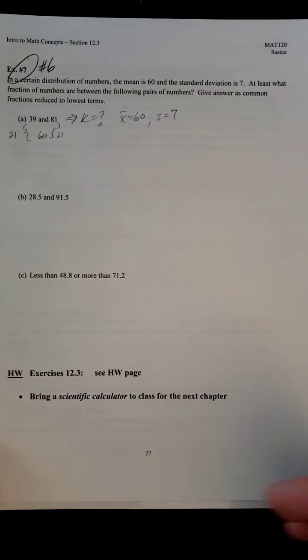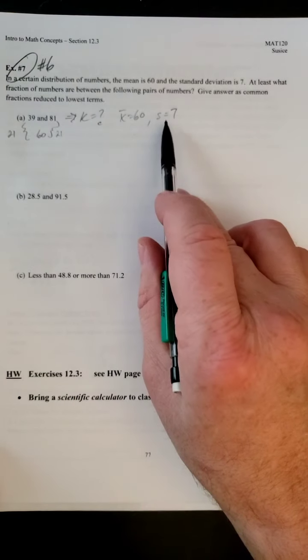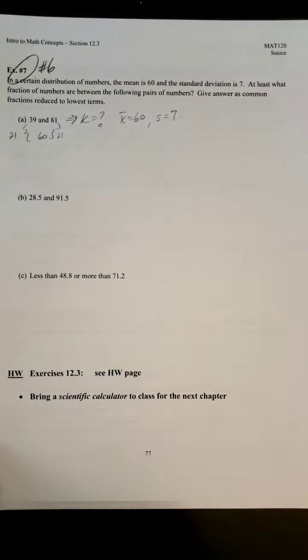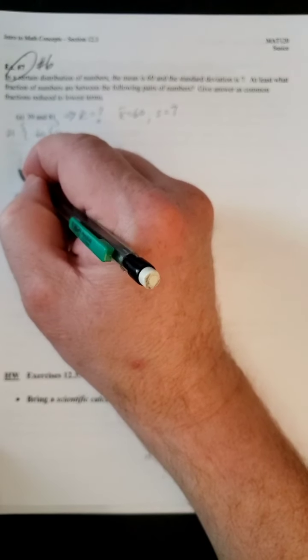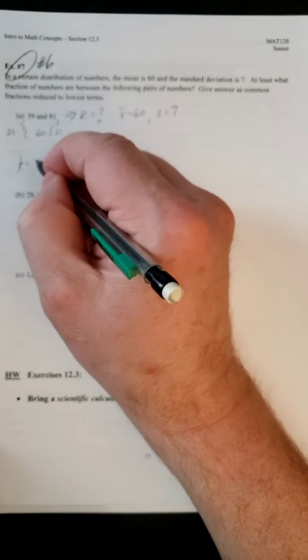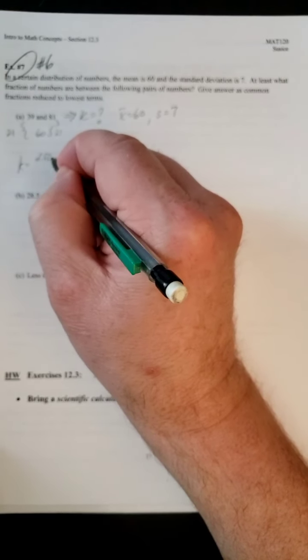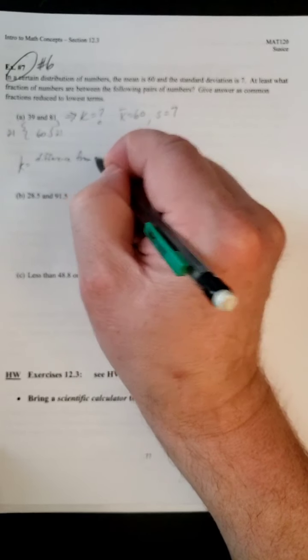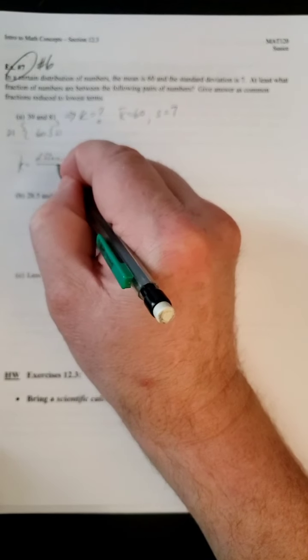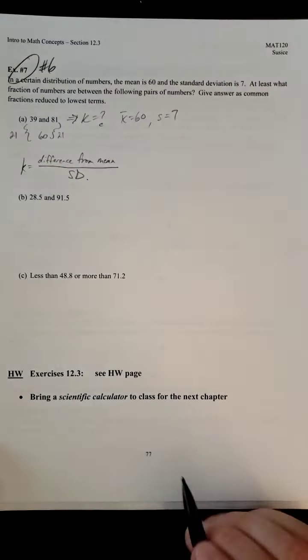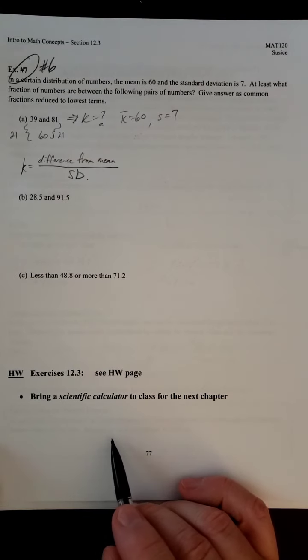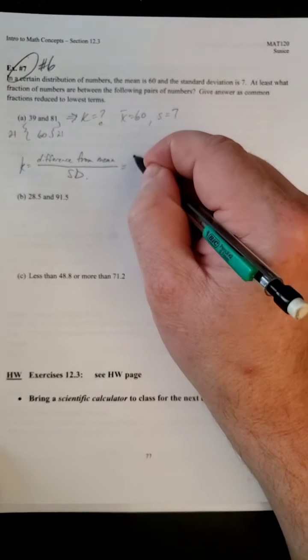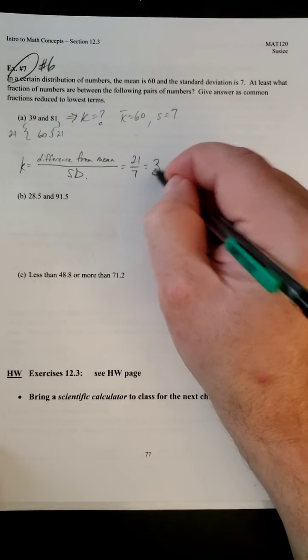So we do get the same amount on both sides, but now the question is, how does 21 relate back to our standard deviation? Here's the formula to define k. We want to look at this difference from the mean and divide it by the standard deviation. The difference from the mean is 21, and the standard deviation is 7, so that gives you a 3.